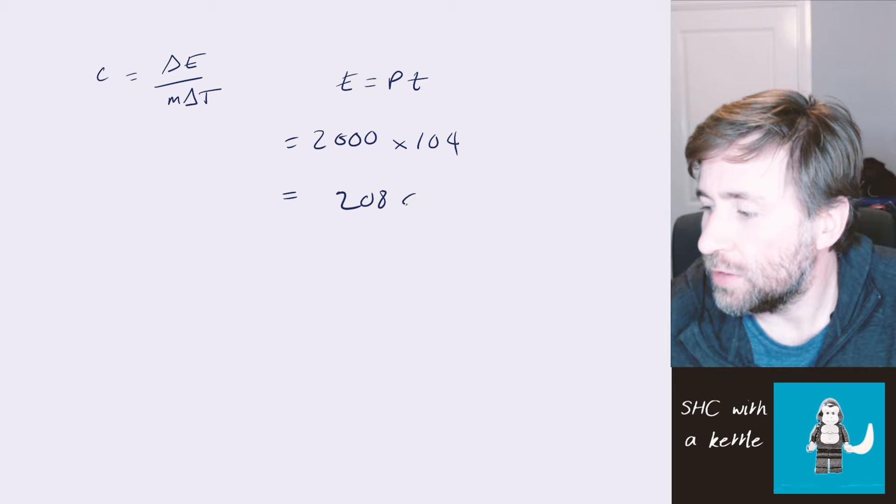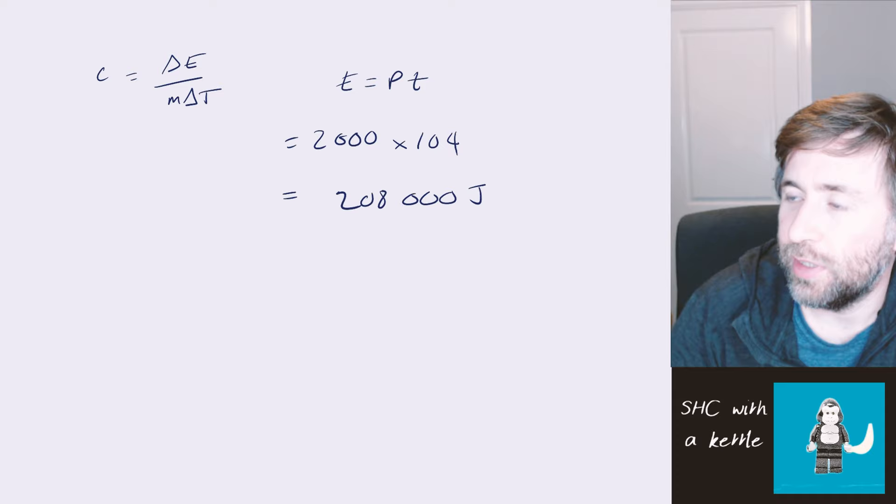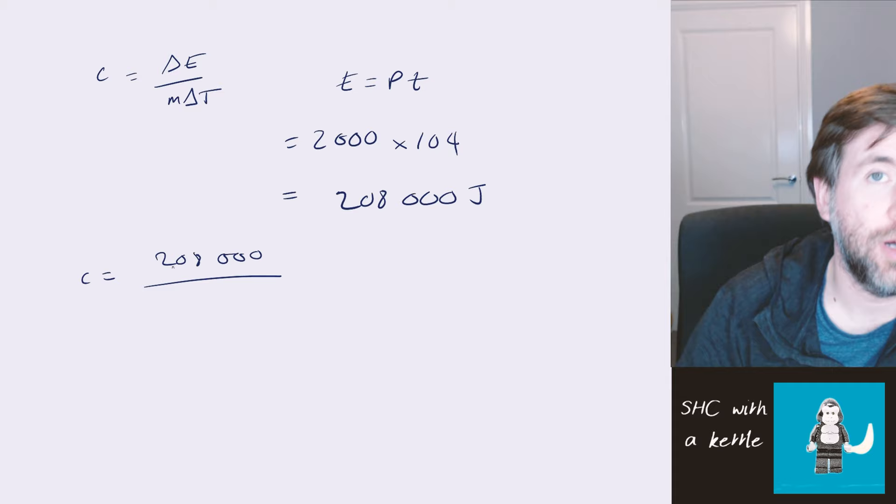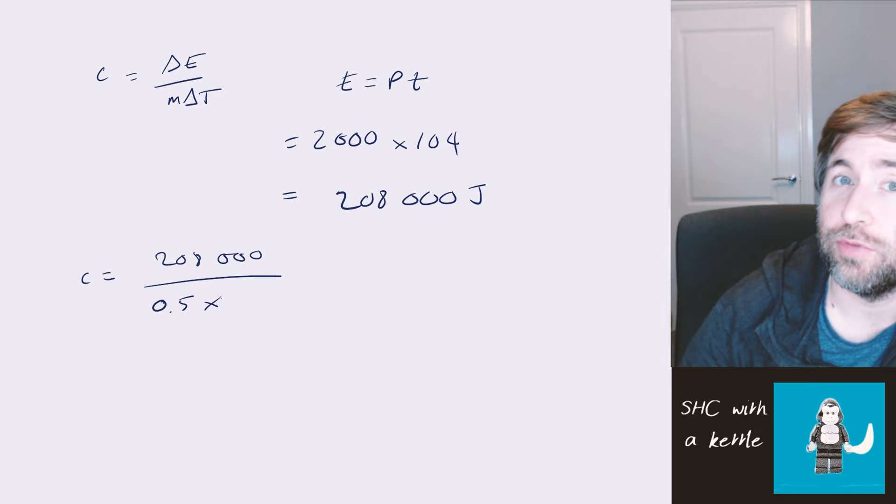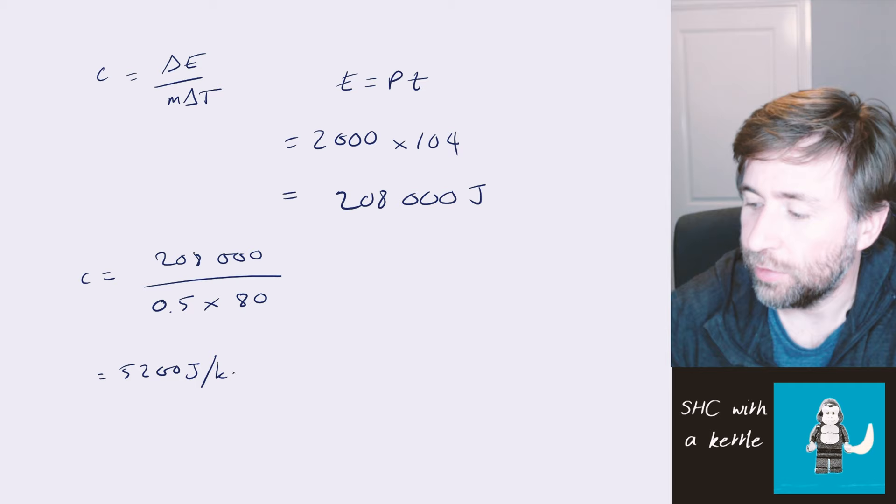We've just worked out the energy supplied, and we're going to use that value to calculate the specific heat capacity by using this equation here on the left hand side. So let's just substitute those numbers in. Now we know our energy, 208 and three more zeros over the mass. Now that was for half a kilogram, 0.5 multiplied by the temperature change, which was from 20 degrees to 100 degrees. So the temperature change was 80. Then once you've got the number substituted in, reach for the calculator. So that one comes out of 5200 joules per kilogram per degree Celsius.